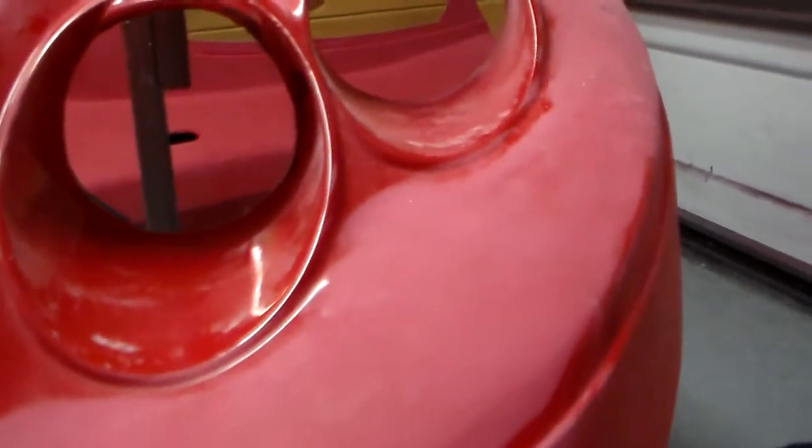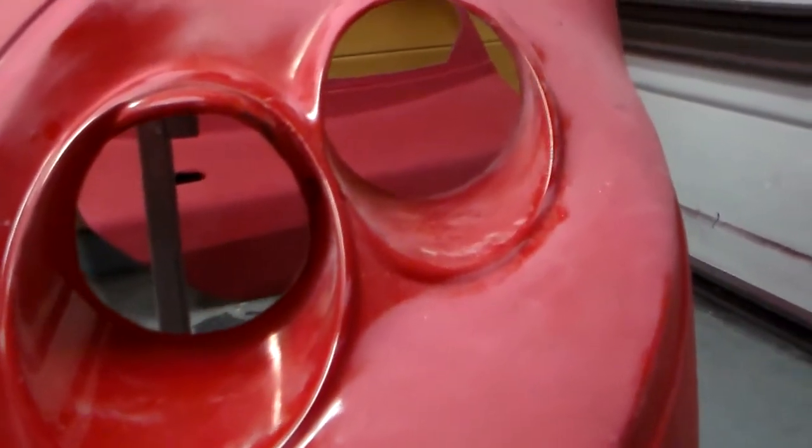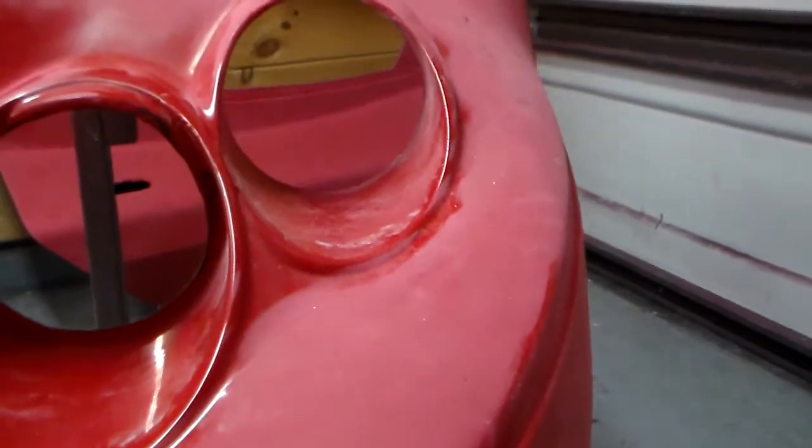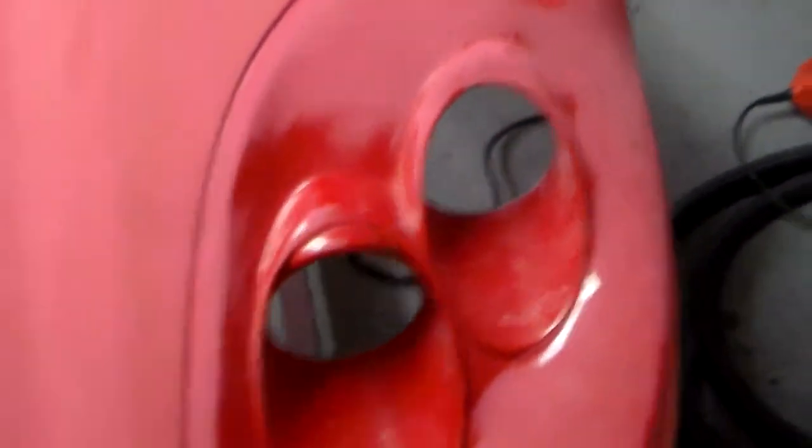So I took the Dremel with the sanding disc and just finished taking out the holes, got them perfect for the size of the headlights, both the high beam and the low beam. The lights themselves need to be modified slightly.